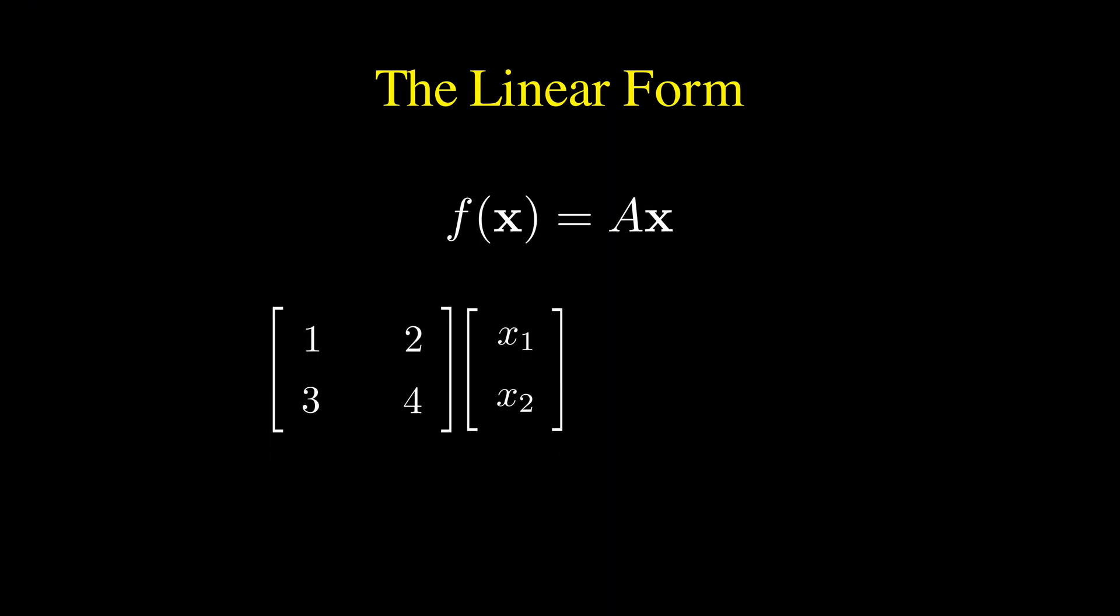If matrix A has entries 1, 2, 3, 4, and vector x has components x1 and x2, the product results in a system of linear expressions. The first component is x1 plus 2x2 and the second is 3x1 plus 4x2. We can view these as two separate functions, f1 and f2.